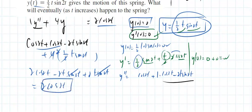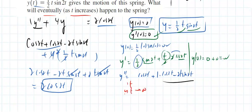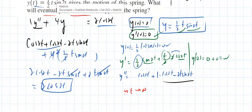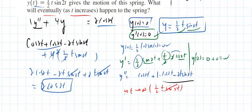They also ask what will eventually happen as t increases. With the solution y equals one-half t·sin(2t), as t approaches infinity, this expression also approaches infinity. That means the spring will break — it exhibits resonance, with unbounded oscillation.